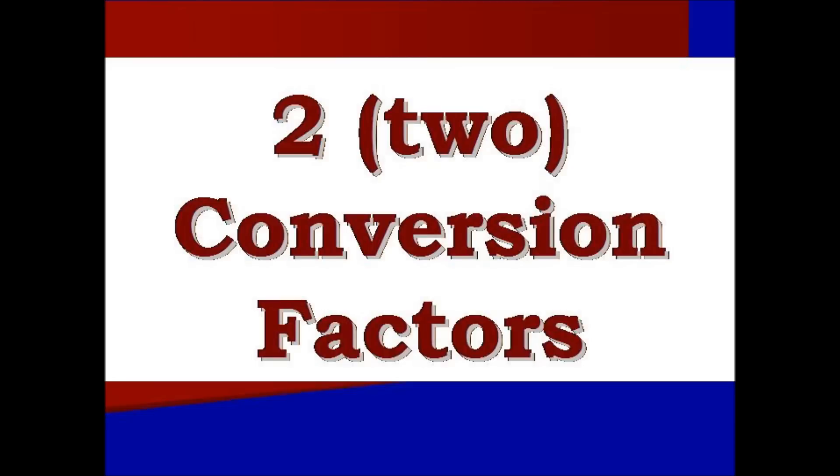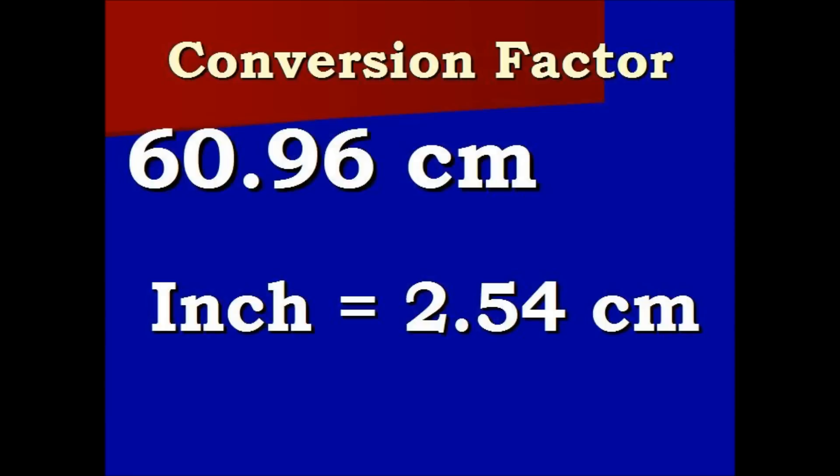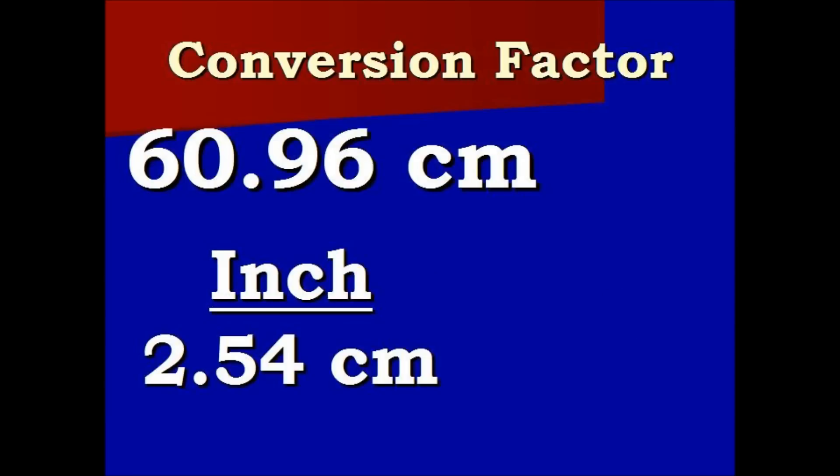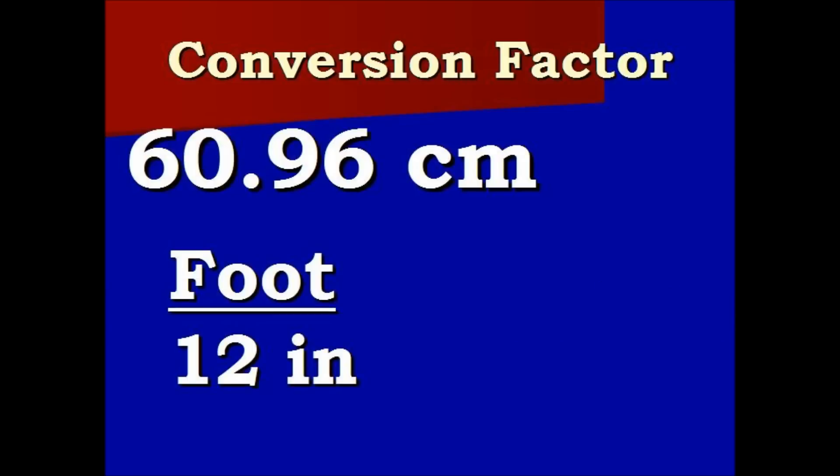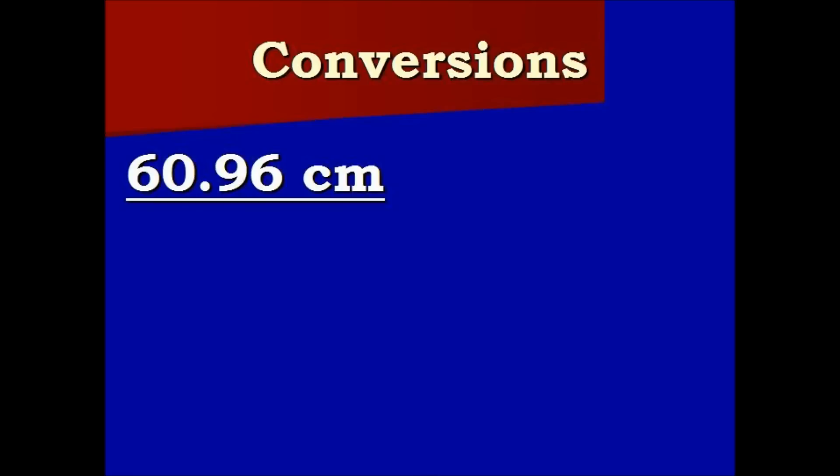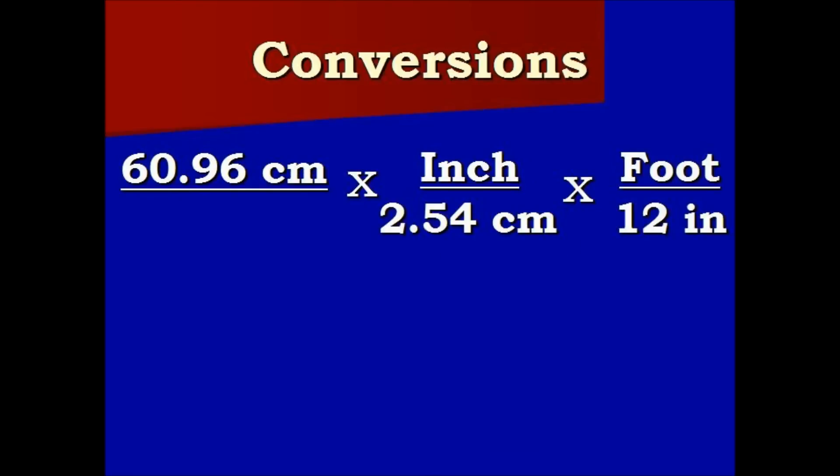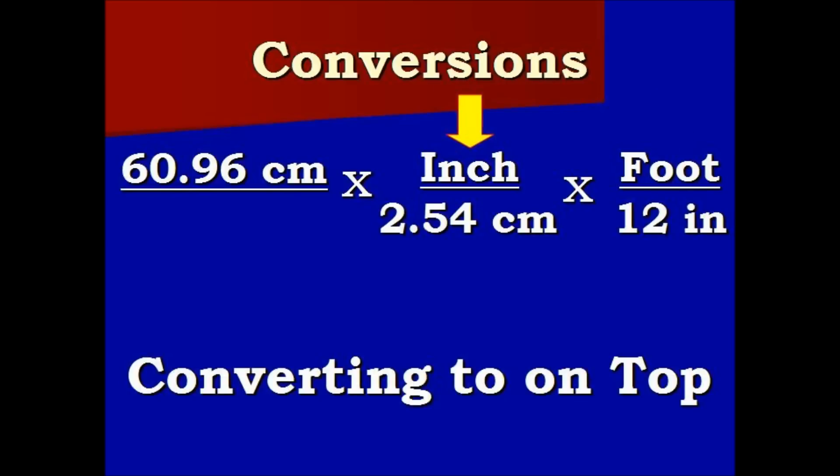Now again, we have the conversion factors, two of them, that we're going to multiply into sixty point nine six. Now this time it's reverse. Notice that the values are different on the top. Now we're going to multiply our conversion factor. What we're converting to is on top.